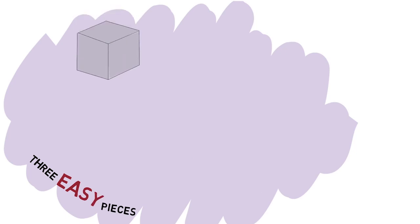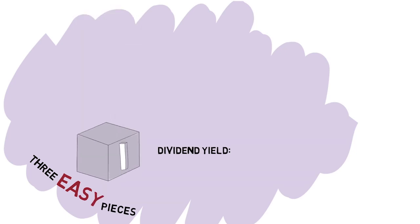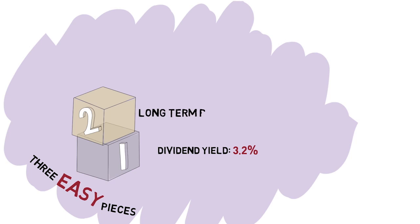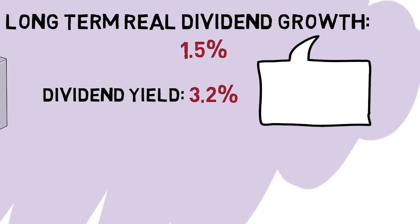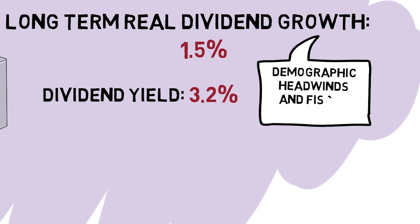So that's it — we've got the main pieces we need to build our estimate. First, the starting dividend yield: 3.2% for global equities adjusted for US buyback activity. Second, long-term real dividend growth — let's use one and a half percent, a bit less than what we've seen historically. As most would agree, many mature economies are facing big demographic headwinds and fiscal problems too.